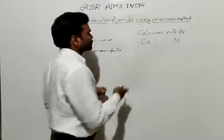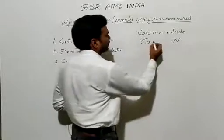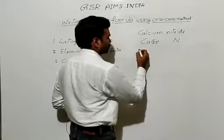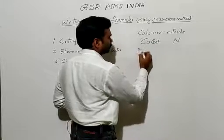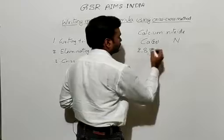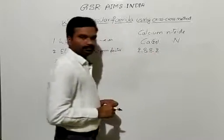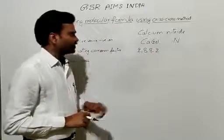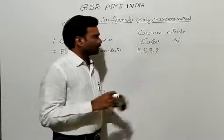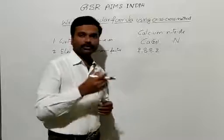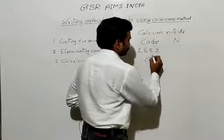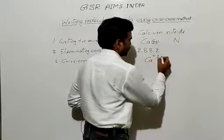As you know, calcium's atomic number is 20. Let us write its configuration: 2, 8, 8, 2. As it is having two valence electrons, it will become stable. It will lose those two electrons and form a Ca²⁺ cation.